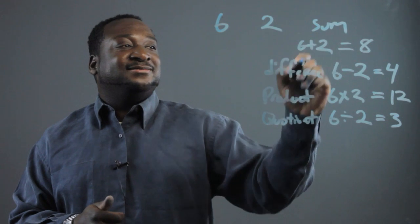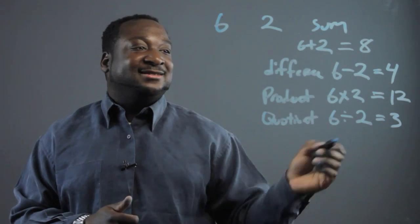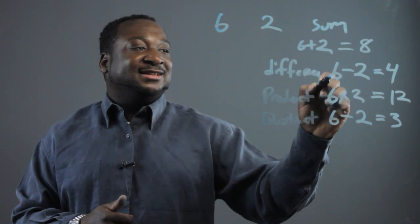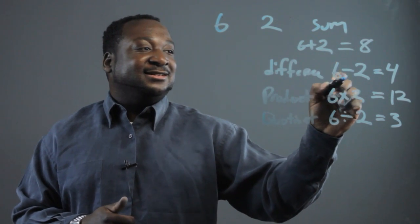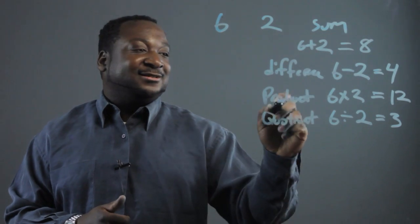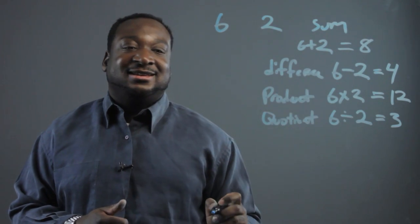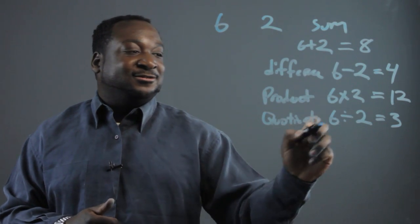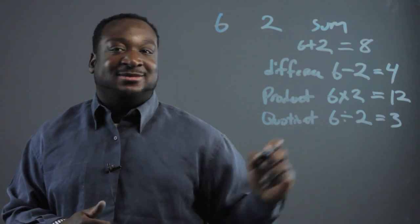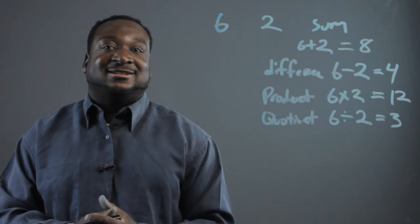So, the sum is the numbers added. The difference is the number subtracted. The product is the number multiplied. And the quotient, that's the number divided by. And that's how you find the answers.